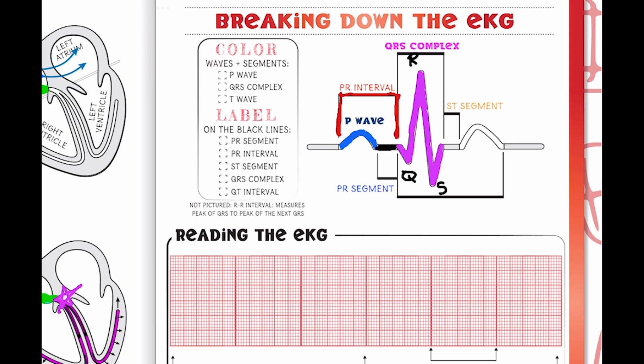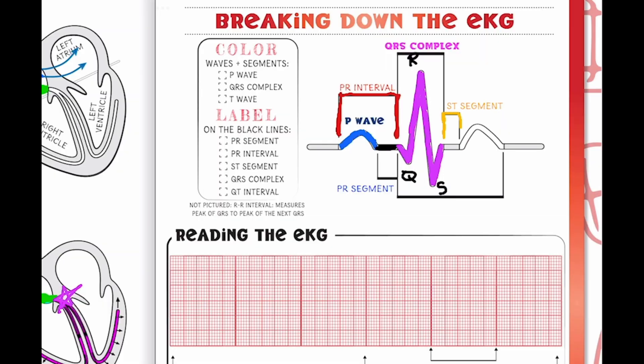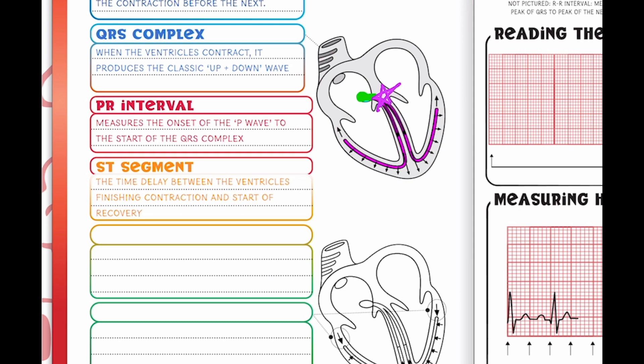And then after our ventricles contract, we're going to see this little line right here and this is going to be our ST segment. So this is the time delay between the ventricles finishing the contraction and the start of the recovery. Oftentimes I like to think of the ST segment almost as if somebody jumps out at you. So when they jump out at you, you're going to have that initial fear, kind of panic, thinking like what the heck, is there a threat, is something wrong. And then finally you start to kind of get your bearings and you calm down and you realize that everything is actually totally fine.